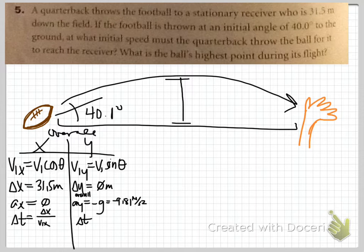Having listed our variables, we've got the same sort of usual suspects. We've got our expressions for VIX and VIY. We're given delta X. Delta Y overall is 0, and that's going to become important.